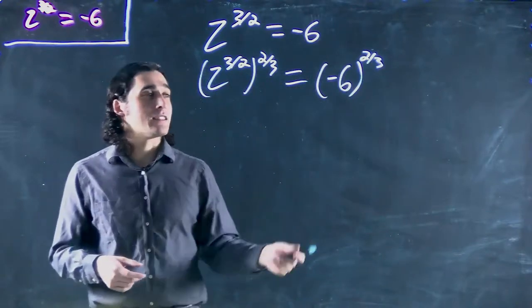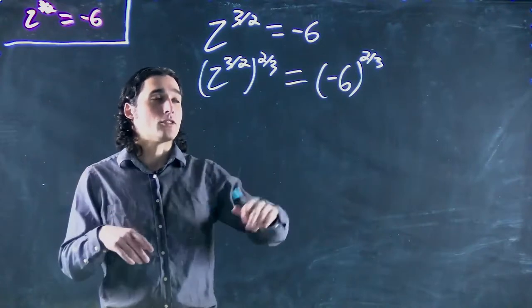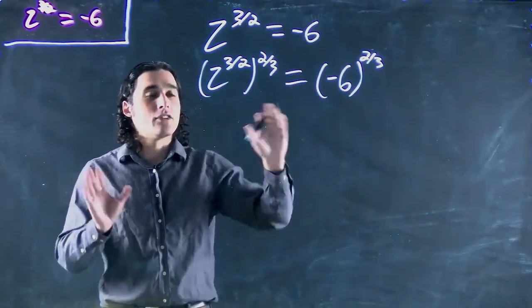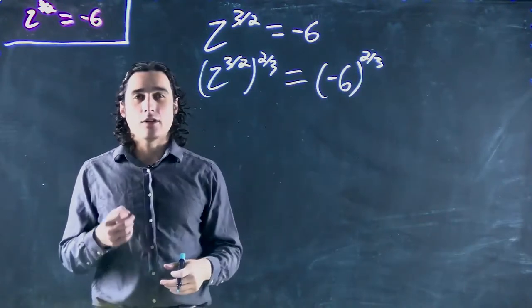Likely if it doesn't, it's because you're not putting the negative 6 within brackets, so it's doing 6 to 2 thirds and then the negative, but it likely is going to give you an error.